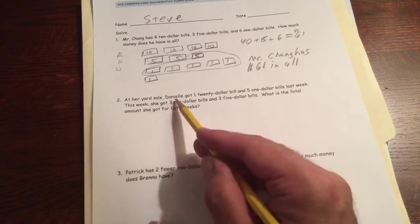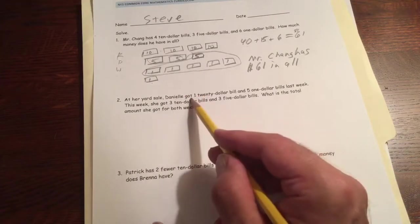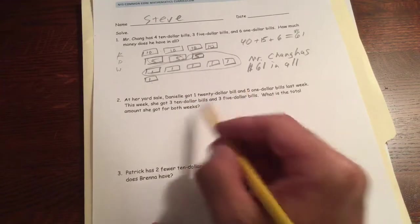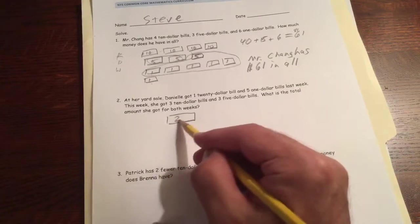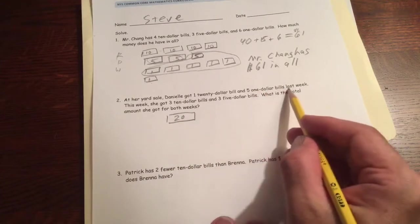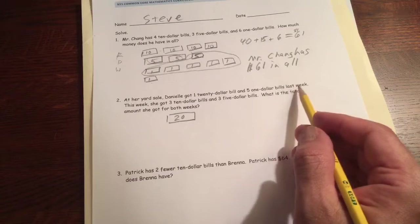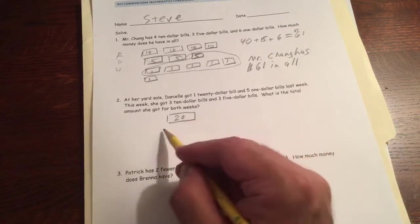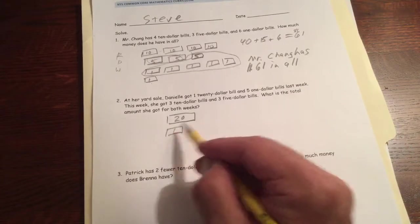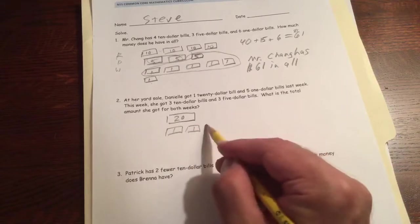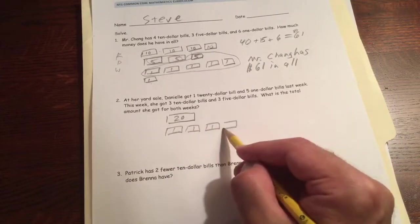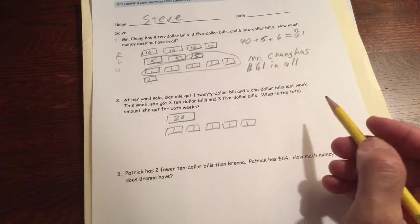At her yard sale, Danielle got one $20 bill. She's got a $20. And five $1 bills last week. So then she's got one, two, three, four, five ones.